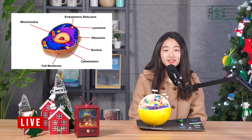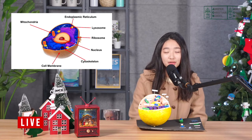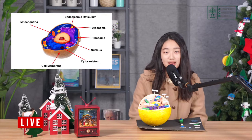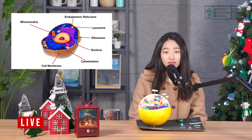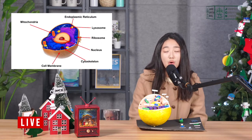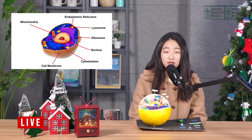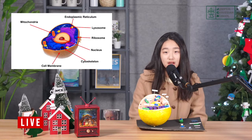Mitochondria. Mitochondria is my favorite organelle because it looks like a hot dog or sausage. Mitochondria is where cellular respiration takes place. Cellular respiration is the breaking down of food molecules with oxygen and the release of water, energy, and carbon dioxide.